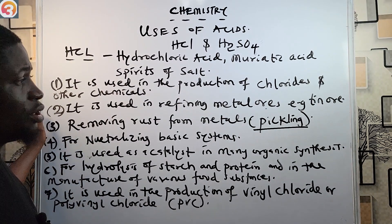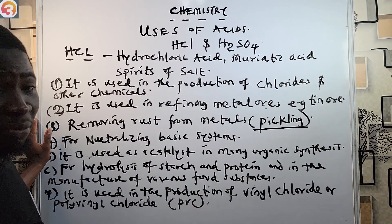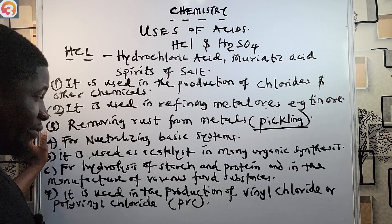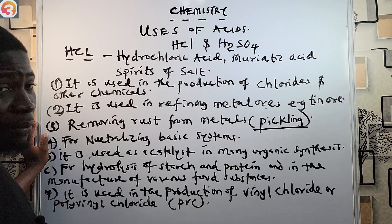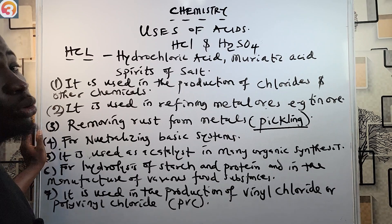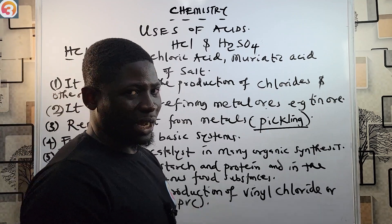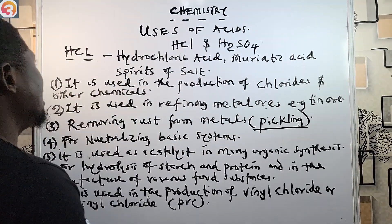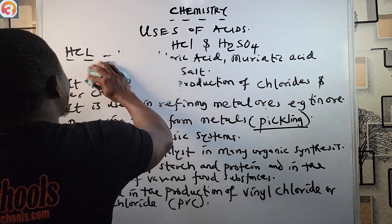So these are the seven uses of hydrochloric acid: production of chlorides and other chemicals; refining metal oils; removing rust from metals via pickling; neutralizing basic systems; acting as a catalyst in organic synthesis; hydrolysis of starch and proteins; and production of PVC. Please know these uses. Now let's look at H2SO4.